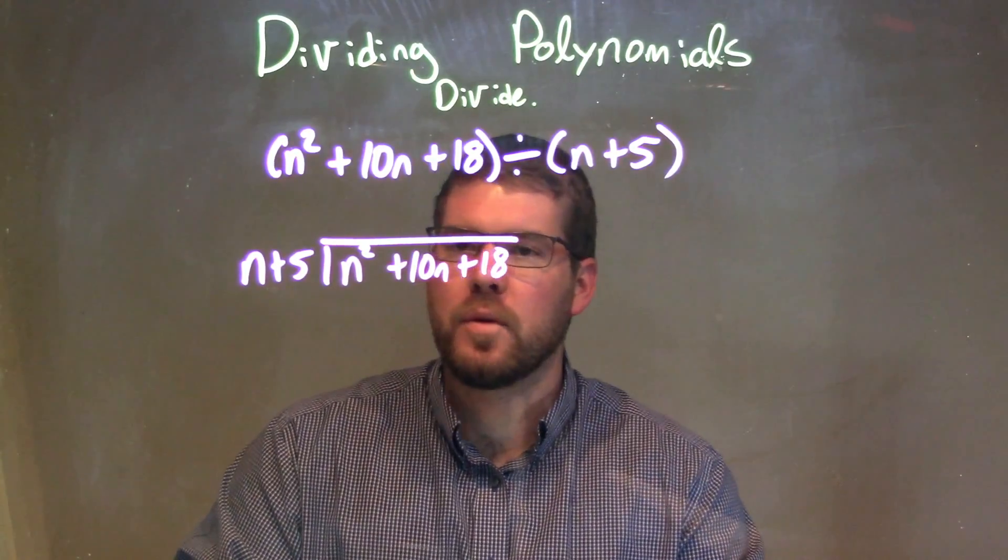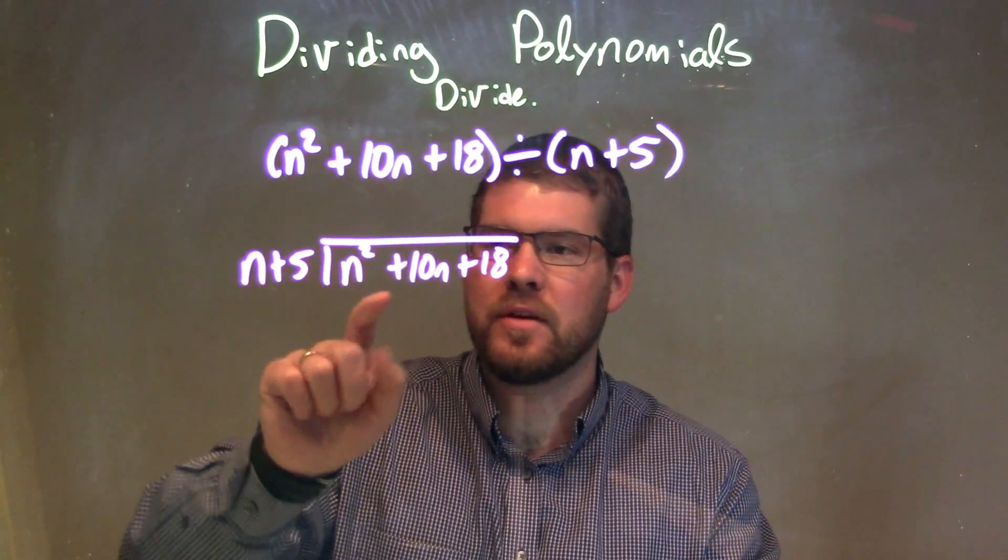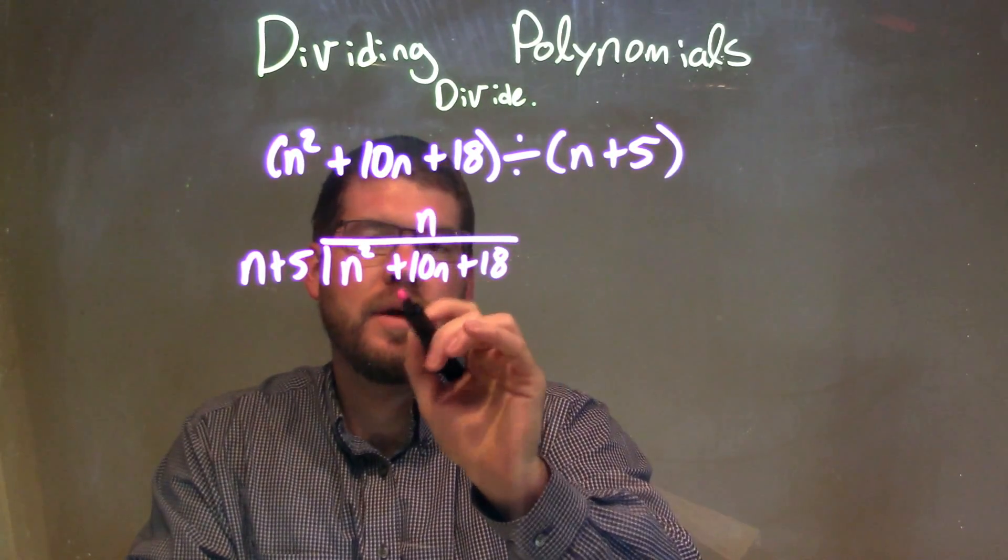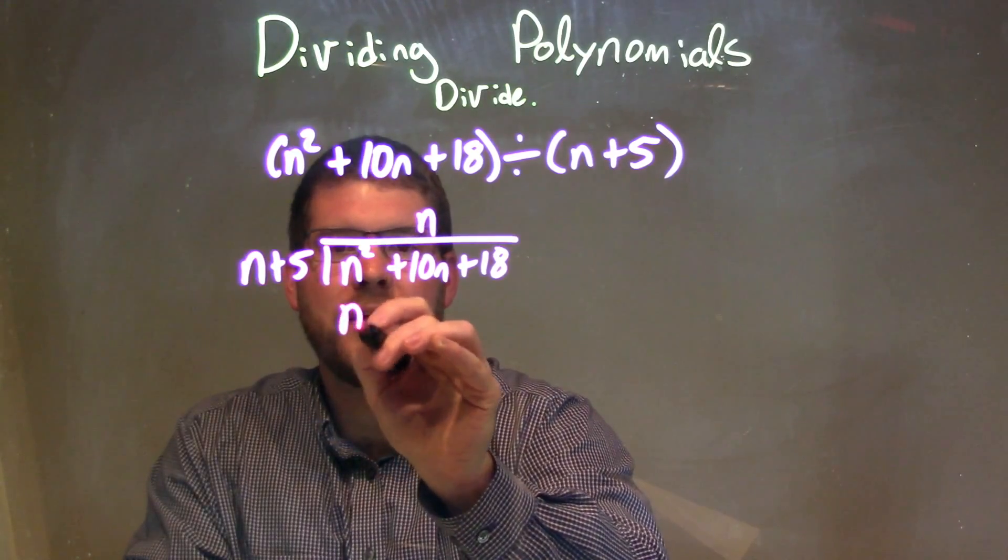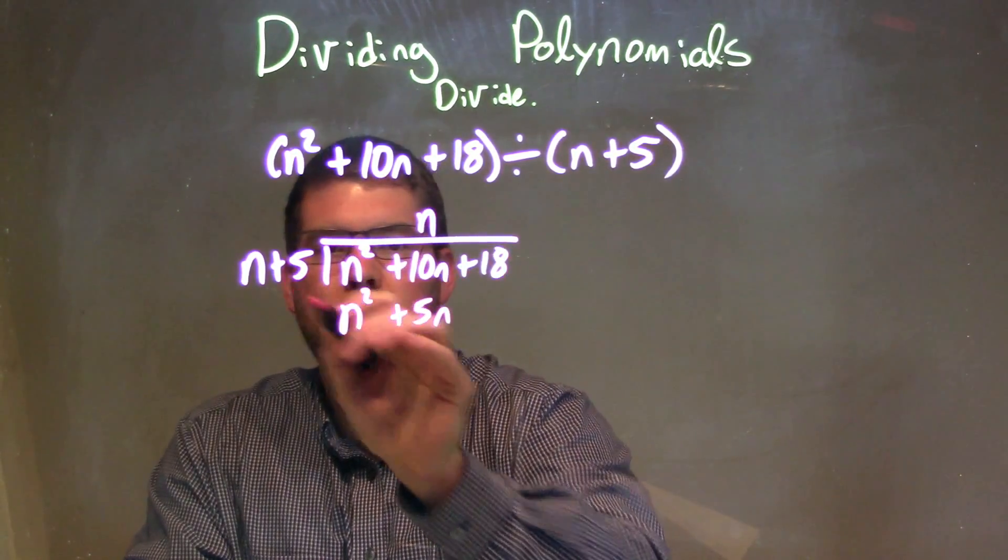So we say, how many times or what times n gives me this n squared right here? And that's just n, right? So I'll put n over the n's place right there. So n times n gives me my n squared and n times 5 is a 5n, multiplied to both parts.